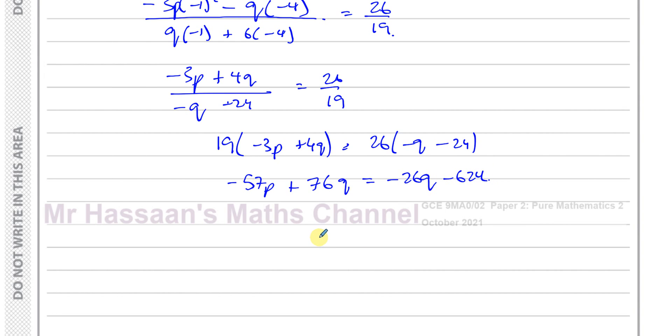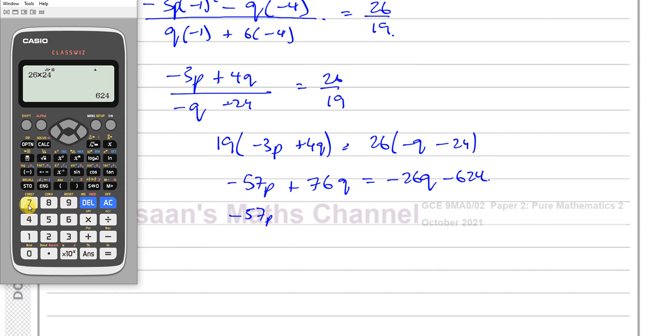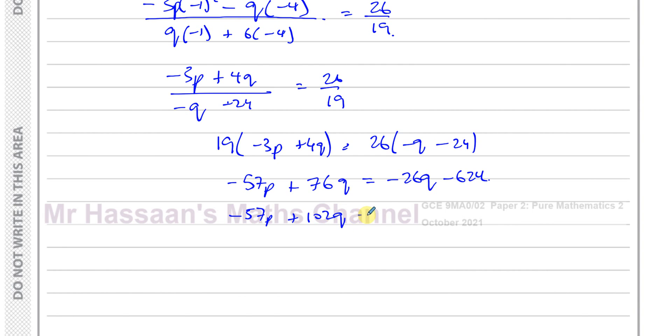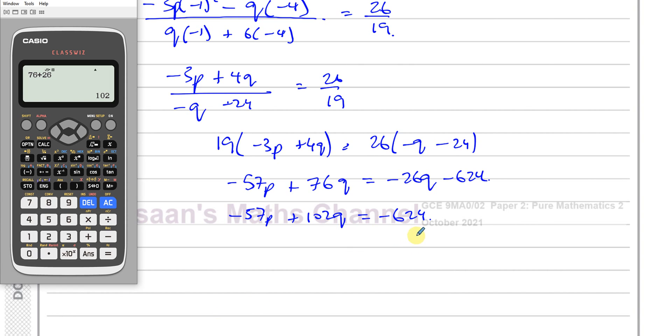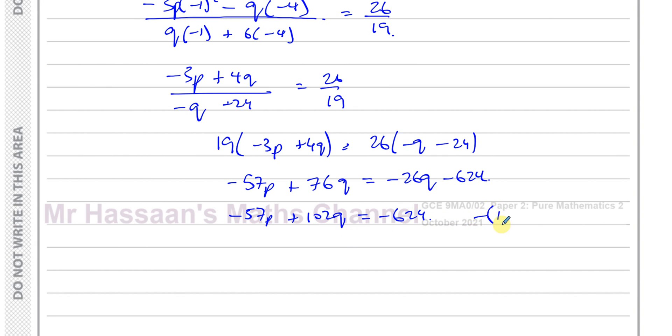So let's bring everything to one side. We're going to have -57p. 76 plus 26 is going to be... That's 90, that's 102, right? 76 + 26. That gives us 102 + 102q is equal to -624. So that's equation number 2.